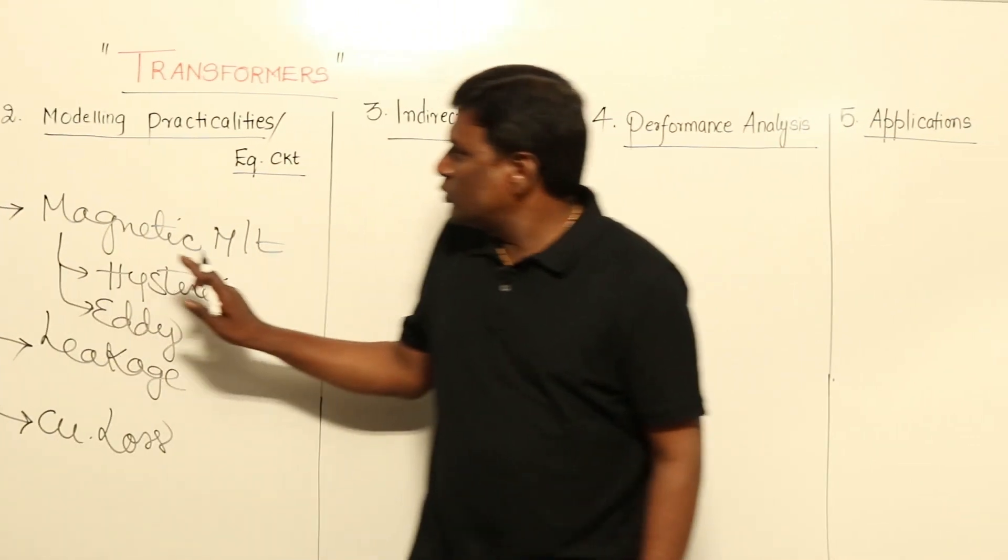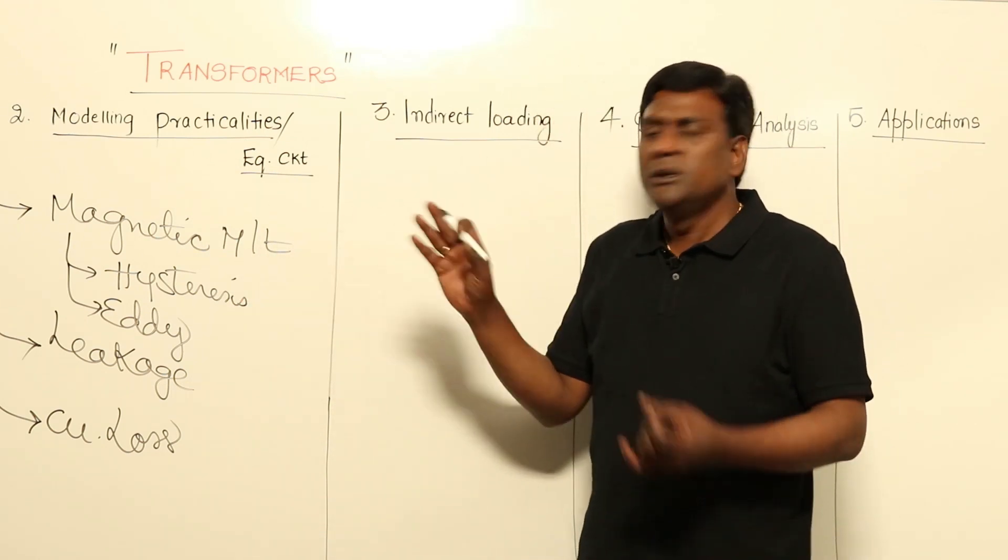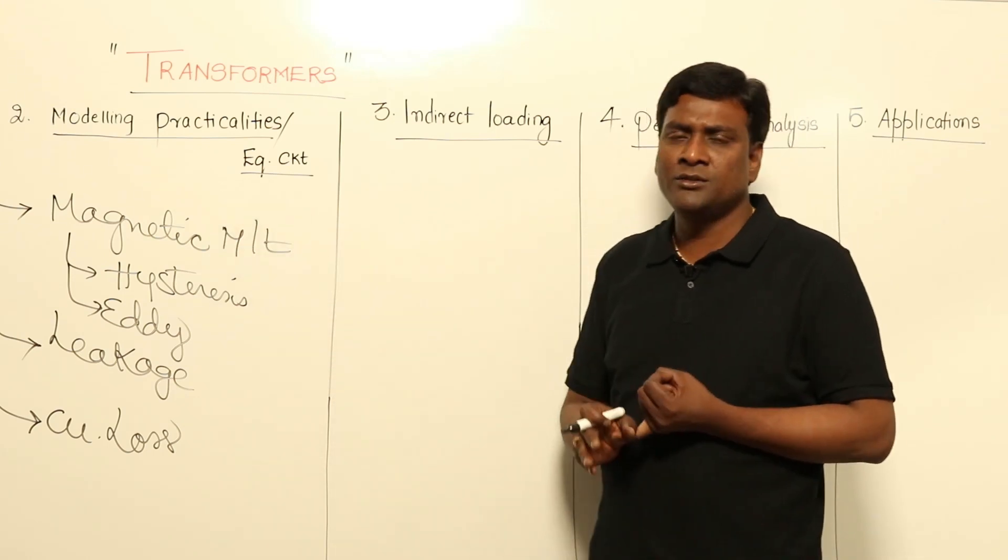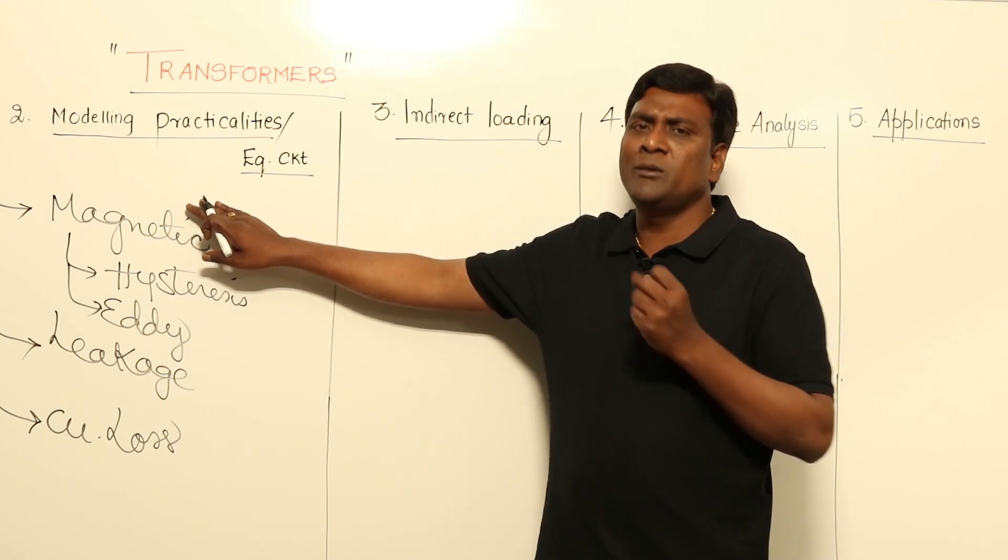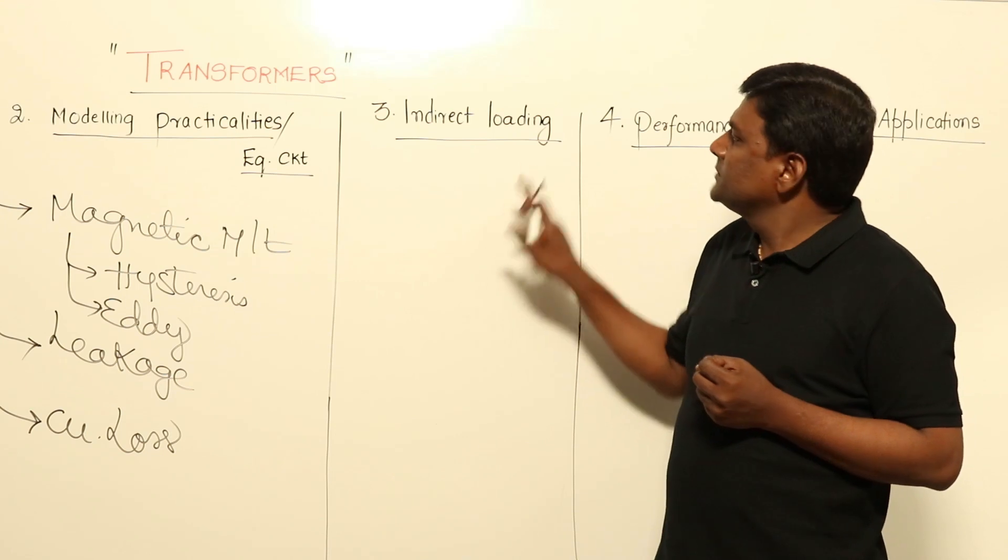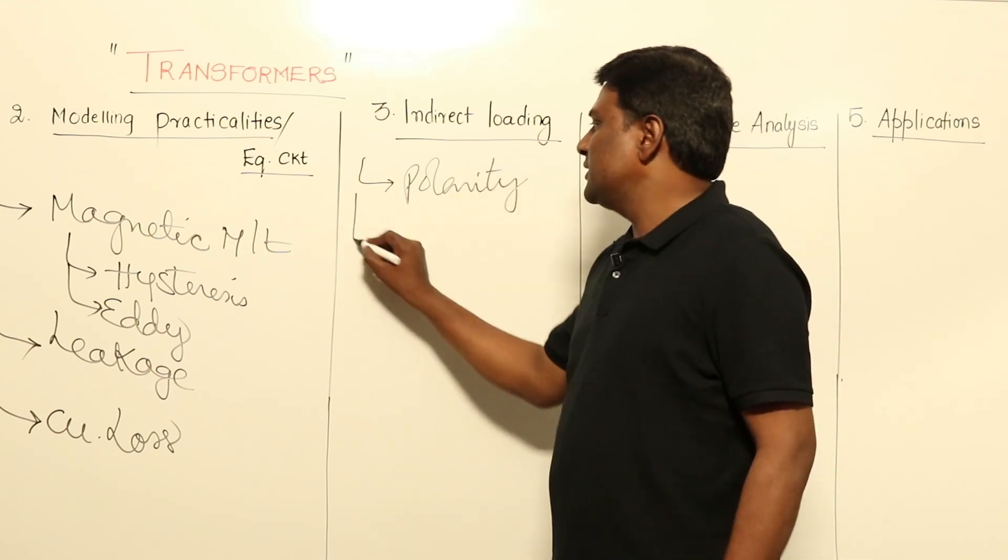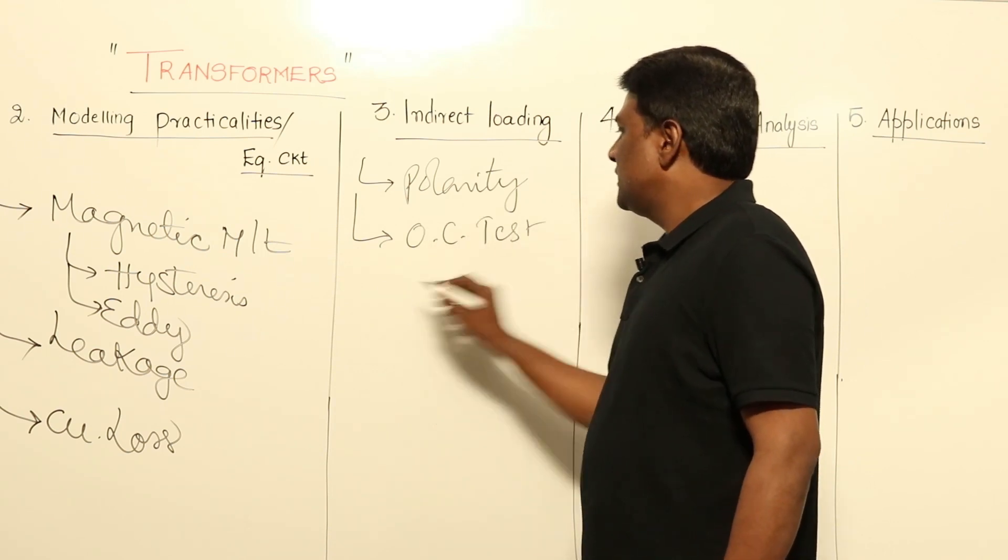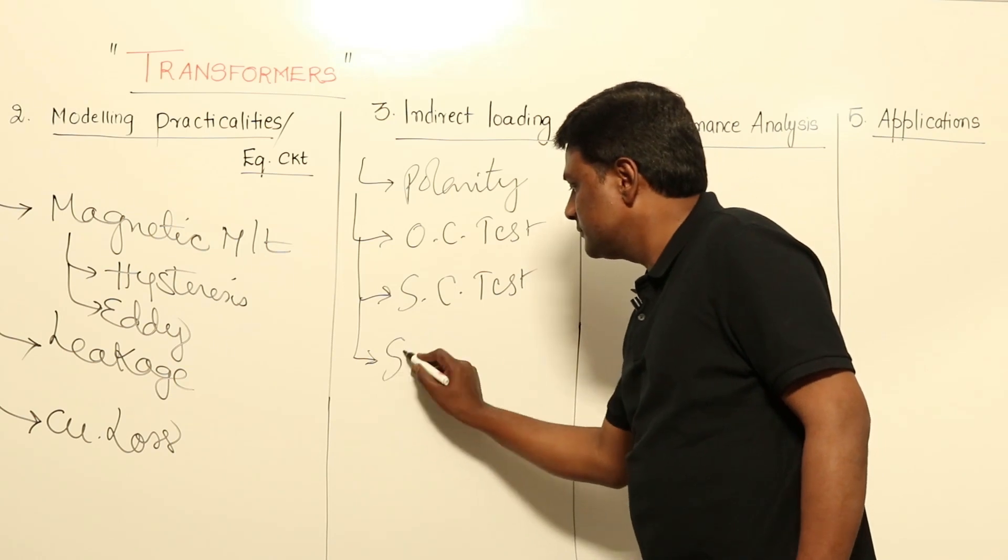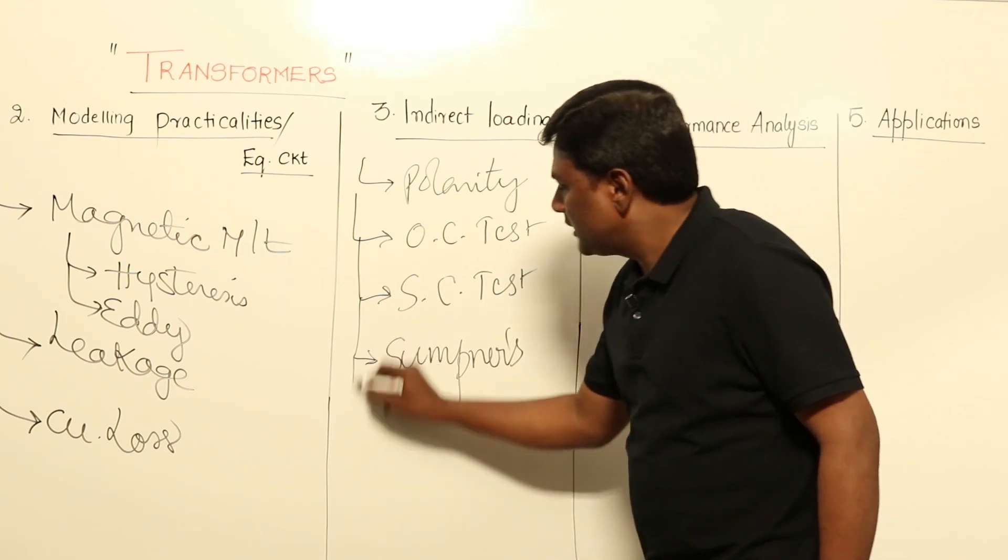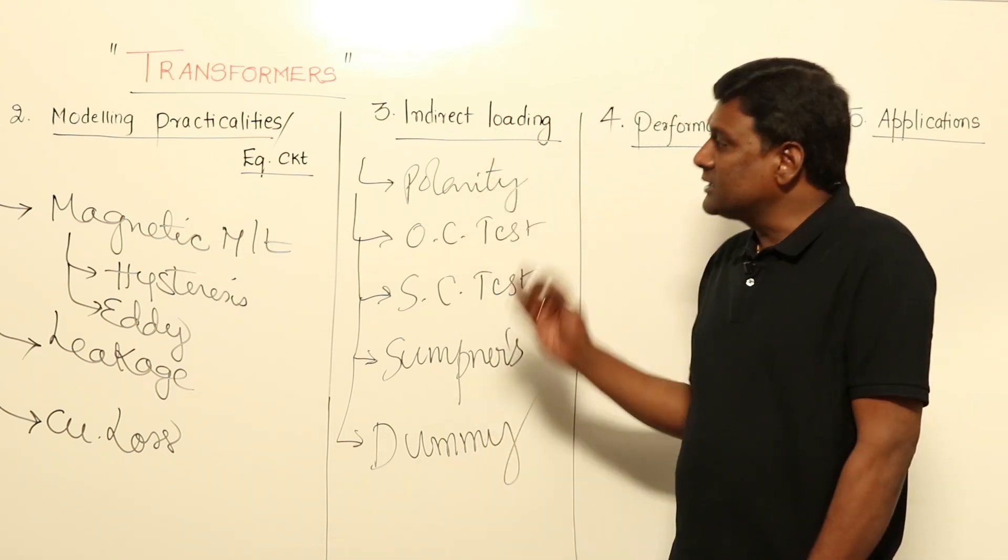Now phase three is going to be here. You are going to find out by which parameters those practicalities has to be modeled. In phase three, we have to find those parameter values of equivalent circuit. For example, if I consider in phase two a resistance, how much is the value of resistance will come here. Leakage will be modeled in the name of inductance. How much is the value of inductance has to be understood here. Now in indirect loading, how many tests will be there: polarity test will be there first, after that OC test will be there, after that SC test will be there, and after that Sumpner's test will be there, and after that dummy load test will be there. These are going to be tests we are going to conduct in order to find parameter values.